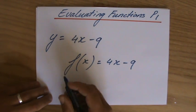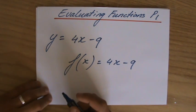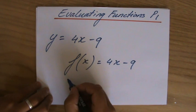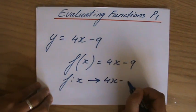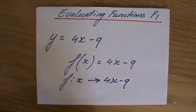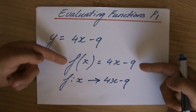Sometimes you will see it written like this. It will say f, x, and then an arrow, 4x minus 9. However, most common, you will see the middle notation.